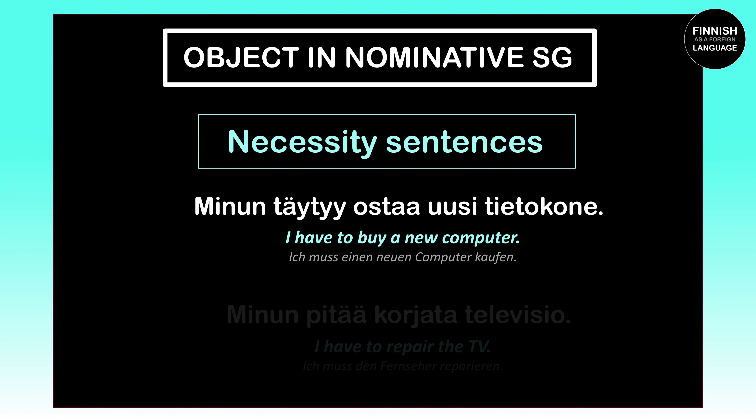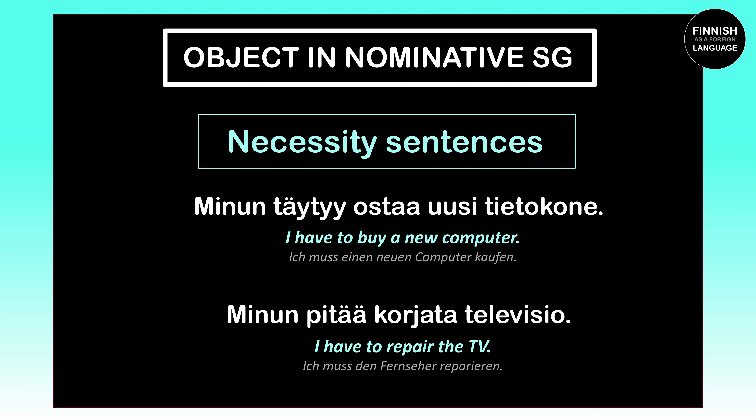Now let's see how it works with objects in necessity sentences. 'Minun täytyy ostaa uusi tietokone' means 'I have to buy a new computer.' Since we have a necessity sentence — one that expresses that we have to do something — our object has to stand in the nominative singular. That is why 'tietokone' (computer) stays the same. Another example: 'Minun pitää korjata televisio' means 'I have to repair the television.' Again, a necessity sentence, so 'televisio' stays in the nominative singular.